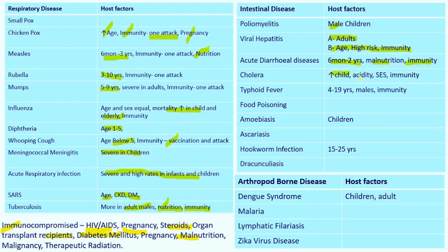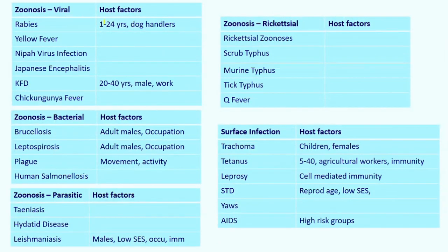Cholera is increased in children and increased when there is less acidity — so patients on treatment for peptic ulcer have a higher chance of cholera. Low socioeconomic status and immunity are factors. Typhoid is more common among four to 19 years, male gender. For amoebiasis, more common in children. Hookworm infections more common in 15 to 25 years. Dengue syndrome more common among children and adults. For rabies, more common among one to 24 years, dog handlers and veterinarians. KFD: 20 to 40 years, males working near forests. Brucellosis: adult males in occupations in close proximity with animals. Plague: movement and activity plays a major role. Leishmaniasis: males more affected; low socioeconomic status, occupation, and immunity play important roles.